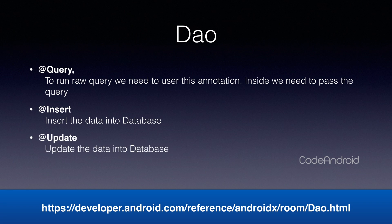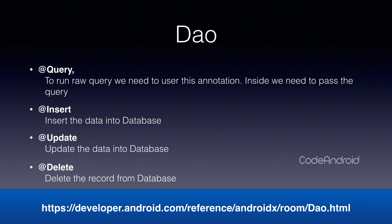For update also, we need to take the entity object as a parameter and annotate the function with @Update. Finally, to delete a record from the database, we need to pass the entity object and annotate the function with @Delete. In this case, the object matching the primary key will get deleted. In case you want to delete the record using a WHERE clause, then we need to use the @Query annotation.